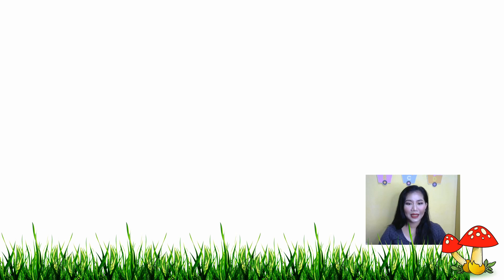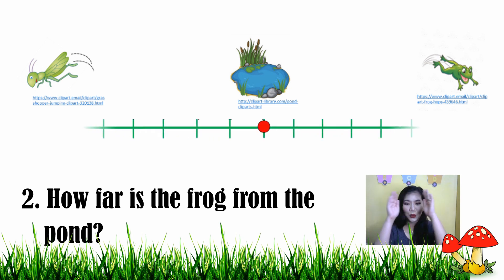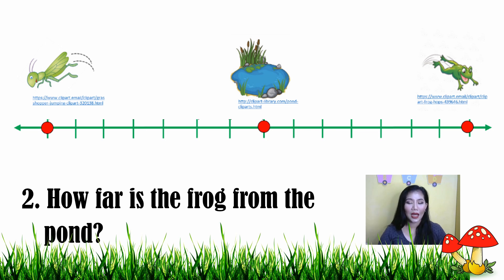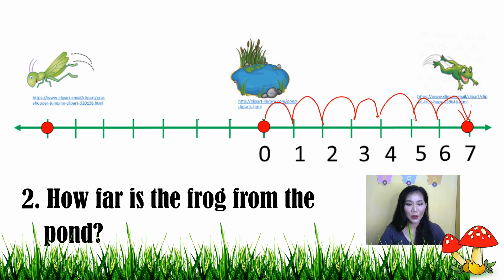Going back to the pond again, question number two: how far is the frog from the pond? To determine how far the frog is from the pond, we use the number line. We start counting from zero — one, two, three, four, five, six, seven. Therefore the frog hops seven meters to the east, so the frog is seven meters away from the pond.